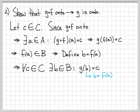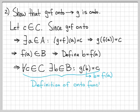Specifically, b = f(a). For all c in C, we've shown there's a b in B such that g(b) = c — that is exactly the definition of an onto function. So we've established that g itself is an onto function, and that's what we were trying to show.